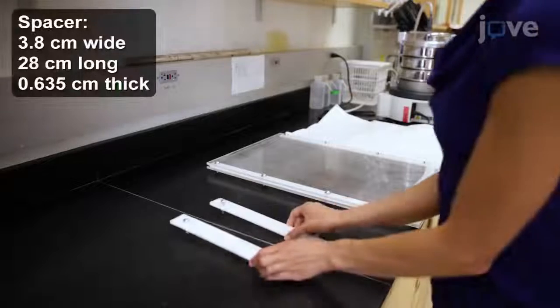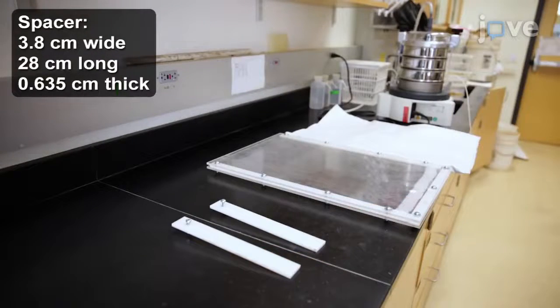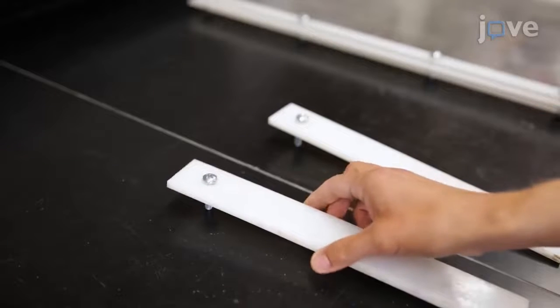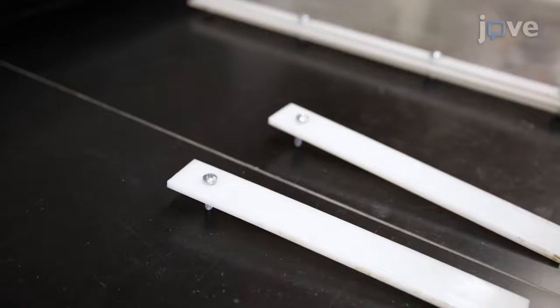Also create two spacers to form the treatment and control patches. Make them with high density polyethylene sheets and secure a screw at the top to allow only partial insertion.